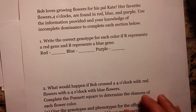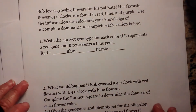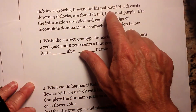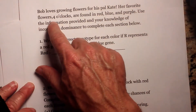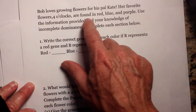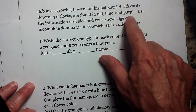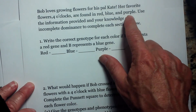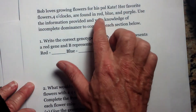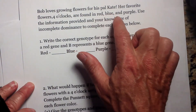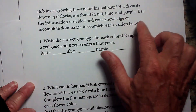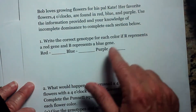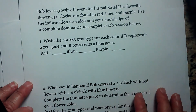Now let's look at incomplete dominance. Bob is growing four o'clock flowers, which are found in red, blue, and purple. We have a third phenotype again, but purple is in between red and blue — and 'in between' is the key word — so this is an example of incomplete dominance.